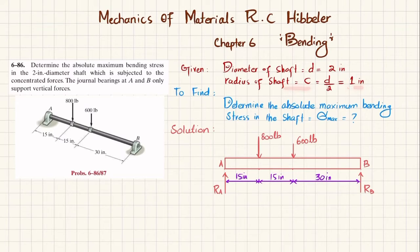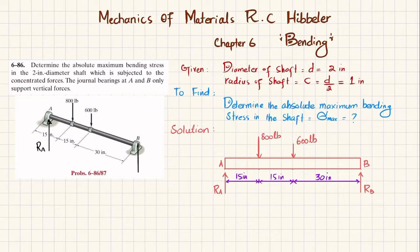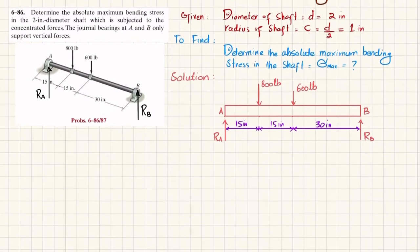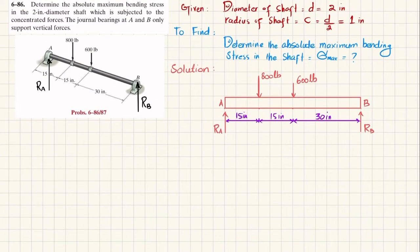The diameter of the shaft is two inches, so its radius will be one inch. Let's start with the solution. If you remove the journal bearing at A, you will have a reaction force R_A, and if you remove the journal bearing at B, you will have a reaction force R_B. I have drawn the free body diagram here.